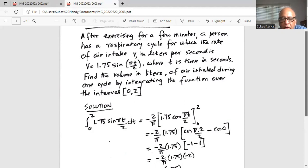So the integration is minus 2 over pi, 1.75 cosine pi t by 2, and the limits of integration are from 0 to 2.